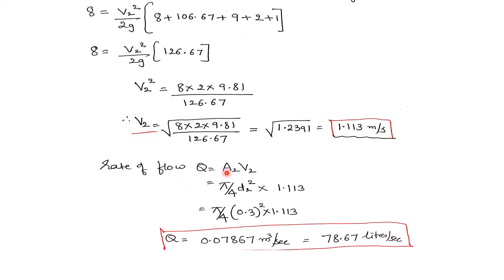Now that we have V₂, the discharge Q = A₂ × V₂ = (π/4) × D₂² × V₂ = (π/4) × (0.3)² × 1.113 = 0.07867 m³/s, which equals 78.67 liters per second. This is the rate of flow. Using the continuity equation, V₁ can also be calculated from A₁V₁ = A₂V₂, and computing Q = A₁V₁ will give the same discharge.